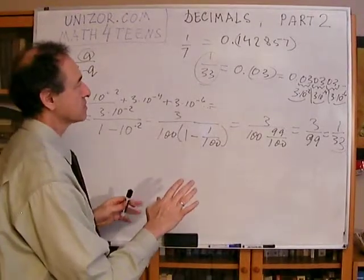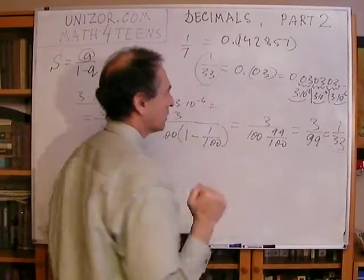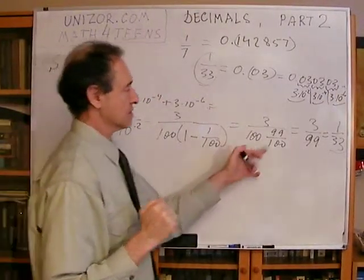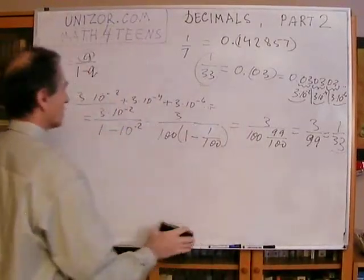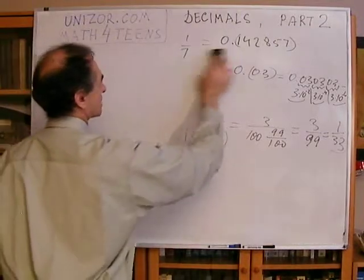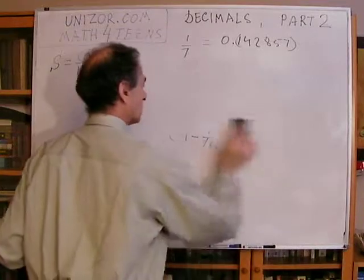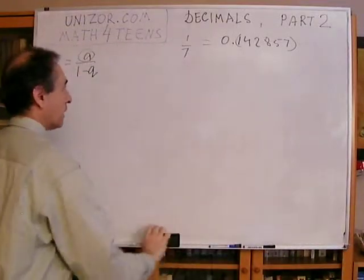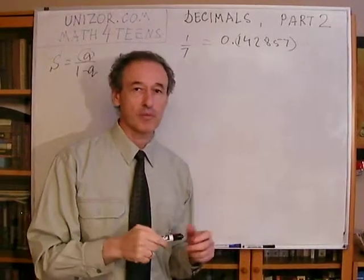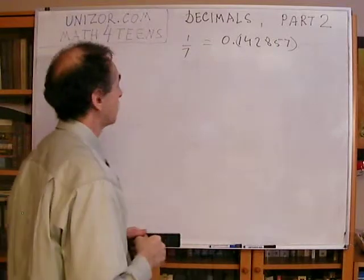This was used when proving in the first part that any periodic decimal fraction is a rational number. Now I will use the same concept of infinite geometrical progression to prove the converse theorem: that every rational number can be represented by either a finite or infinite periodic decimal fraction.